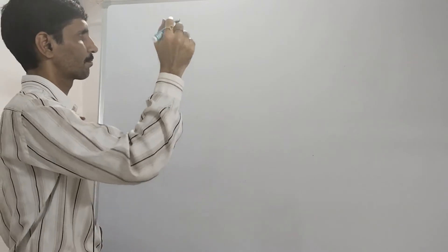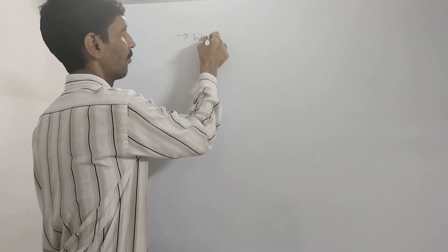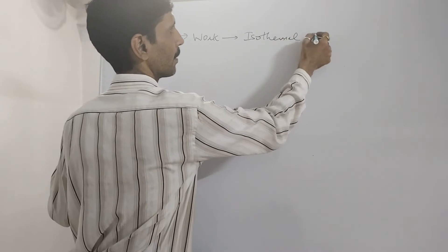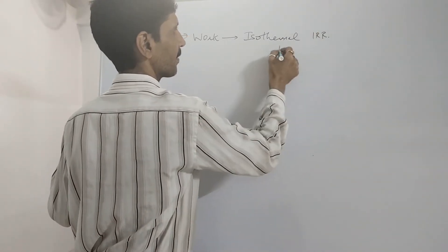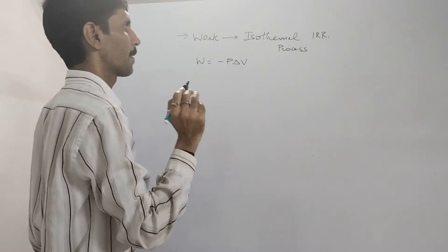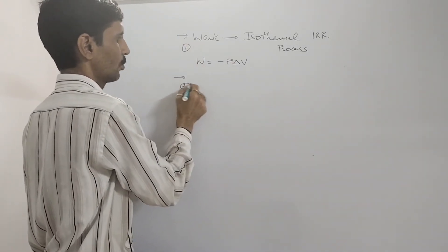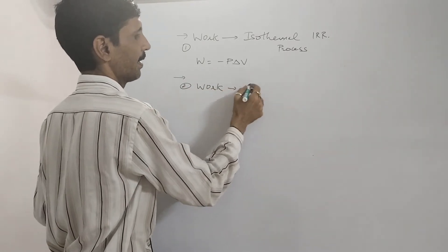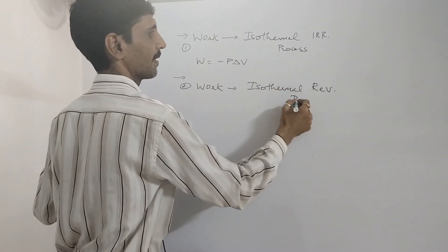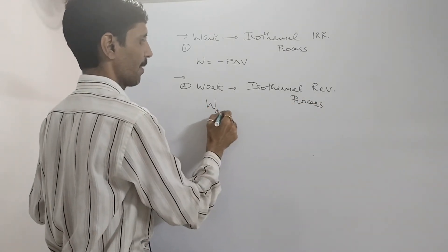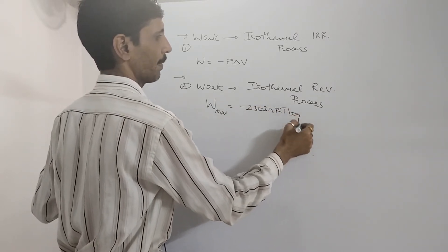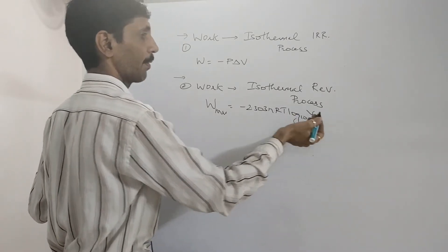Condition number one is work under isothermal irreversible process, so we have W is equal to minus of P delta V. Number two, we consider work under isothermal reversible process, so that will be W max is equal to minus of 2.303 nRT log to the base 10 of V2 upon V1, or it can be P1 upon P2 as well.